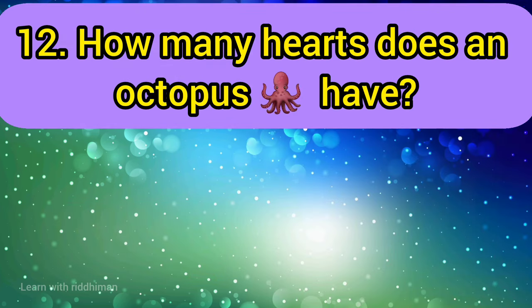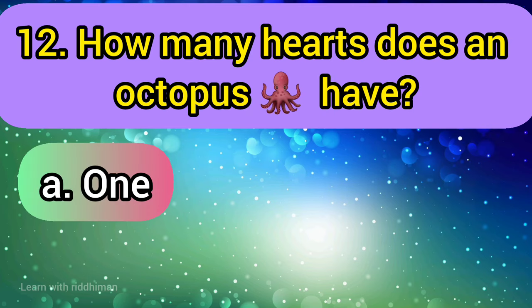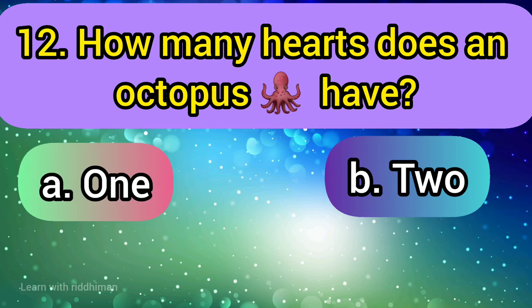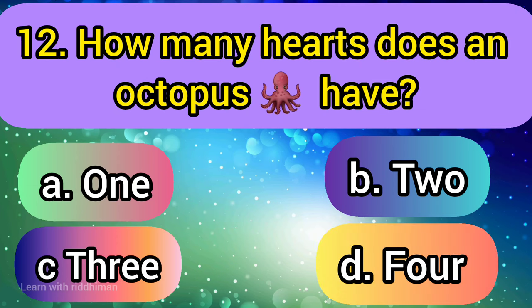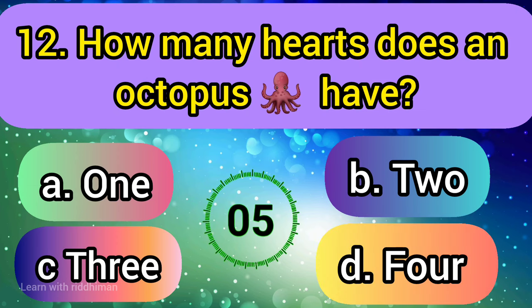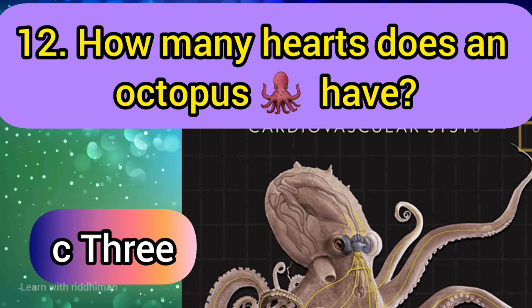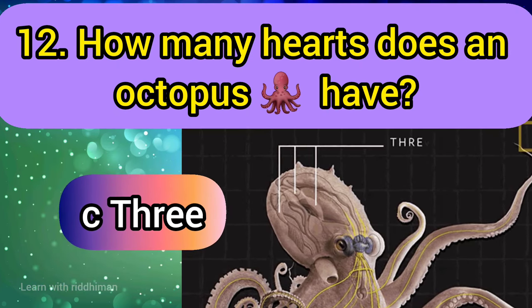How many hearts does an octopus have? 1, 2, 3, 4. Answer is 3.